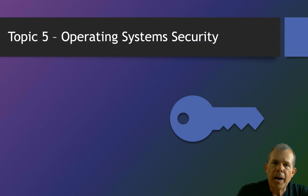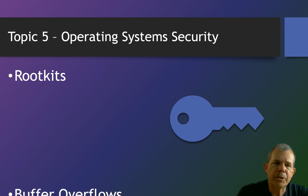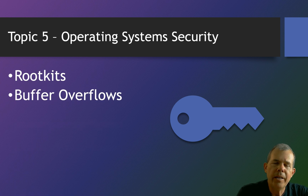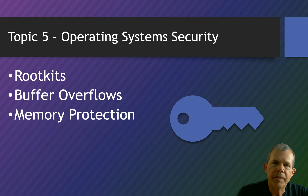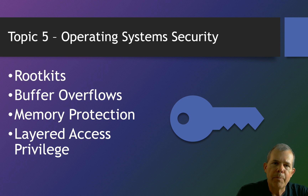In unit five, we're going to talk about operating systems. We'll look at rootkits and how they are able to worm their way into an operating system, take over as an administrator, and hide themselves from tools normally used to identify what programs are running. We'll talk about buffer overflows and how they can be used to plant malicious code. Operating systems are designed to have different levels of memory protection and layers of privileged access, and we'll investigate those security issues.